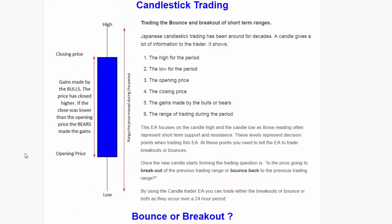Essentially, if you know a bit about candlestick trading, you'll know that the price starts out at a particular level, it makes a low, then either goes up or down — in this case it went up — and it closed at a certain level after making a high. A candlestick normally has a wick on the upside, a wick on the downside, and a body which shows which direction the candle moved. This candle could be a one-minute candle or a daily candle.